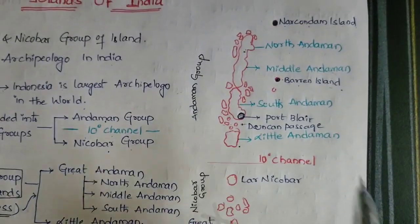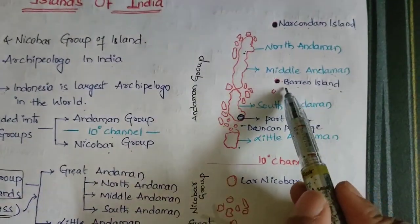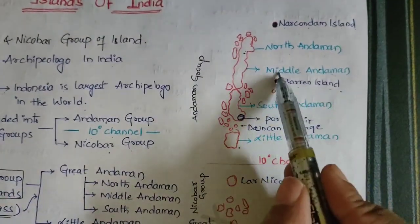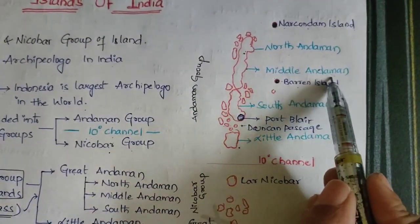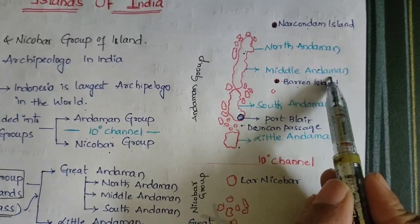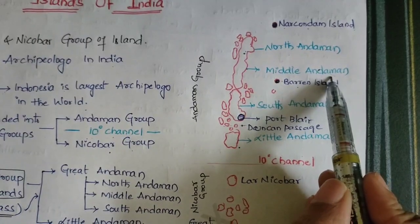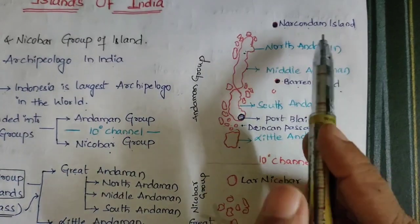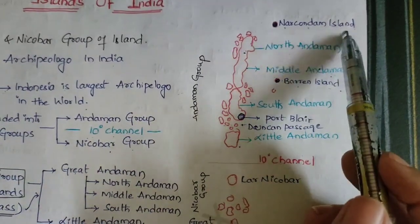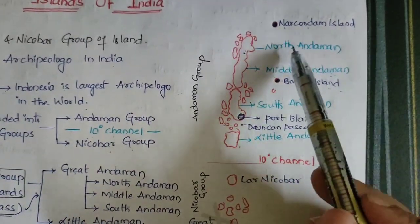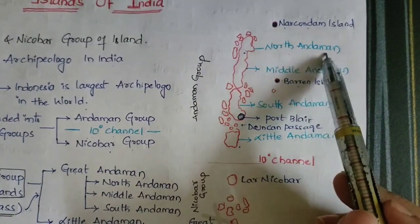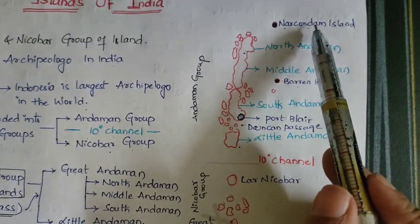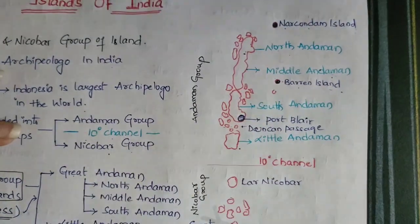Barren Island is located in Middle Andaman and is the only active volcano in India. Narconum Island, which is at North Andaman, is the extinct volcano.